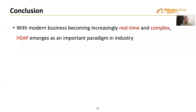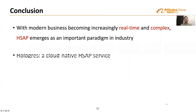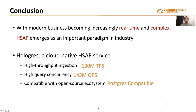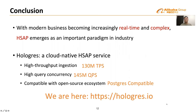In summary, with modern business becoming increasingly real-time and complex, HSAP emerges as an important paradigm in industry. In Alibaba, we built Hologres — a cloud-native HSAP service that can handle high-throughput data ingestion, high-concurrency hybrid query workloads, and is compatible with the open-source ecosystem. More information on Hologres can be found at the referenced site. Thank you for watching.